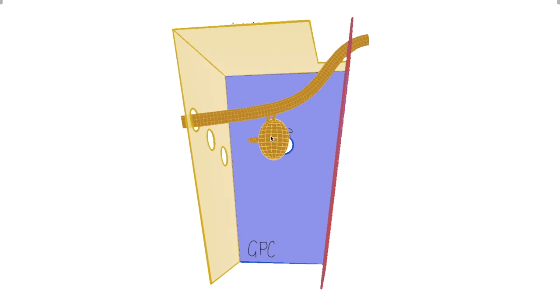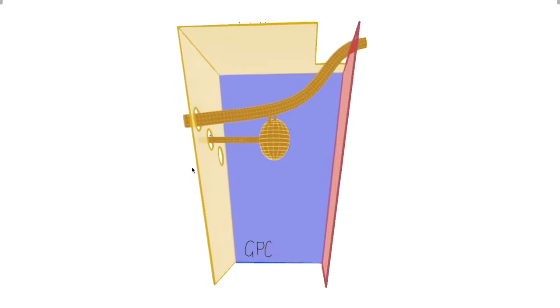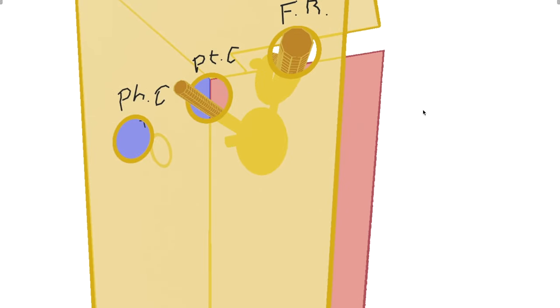Here we see the nerve of the pterygoid canal, which moves with its companion artery. And so too goes the pharyngeal nerve, through the pharyngeal canal.